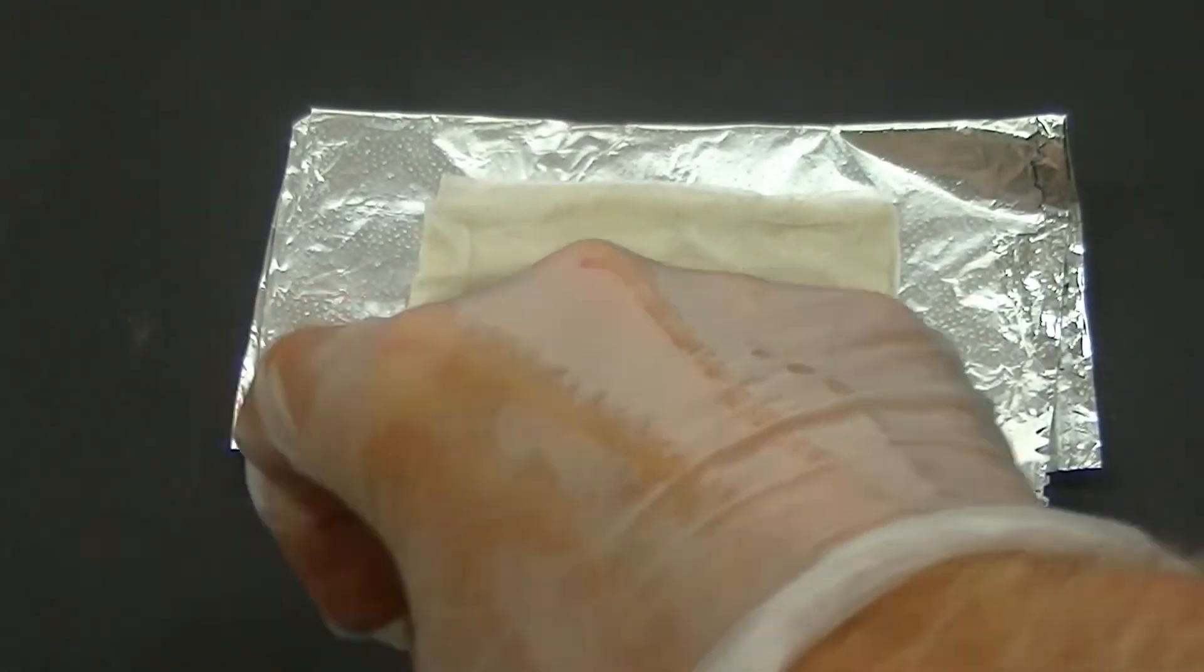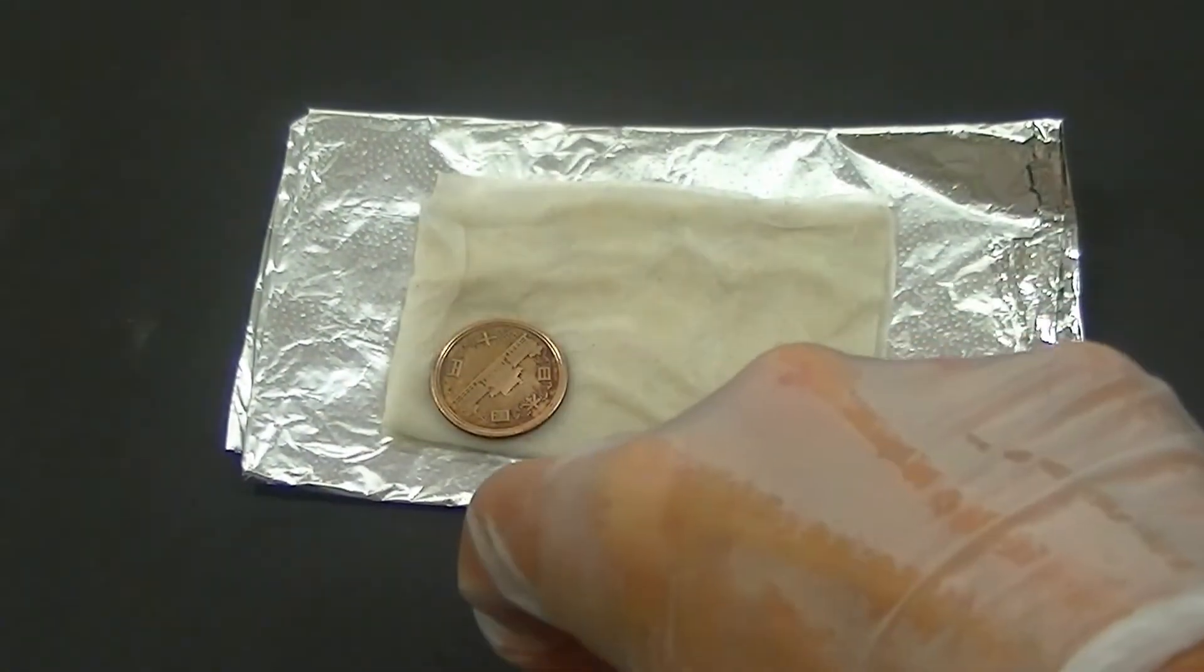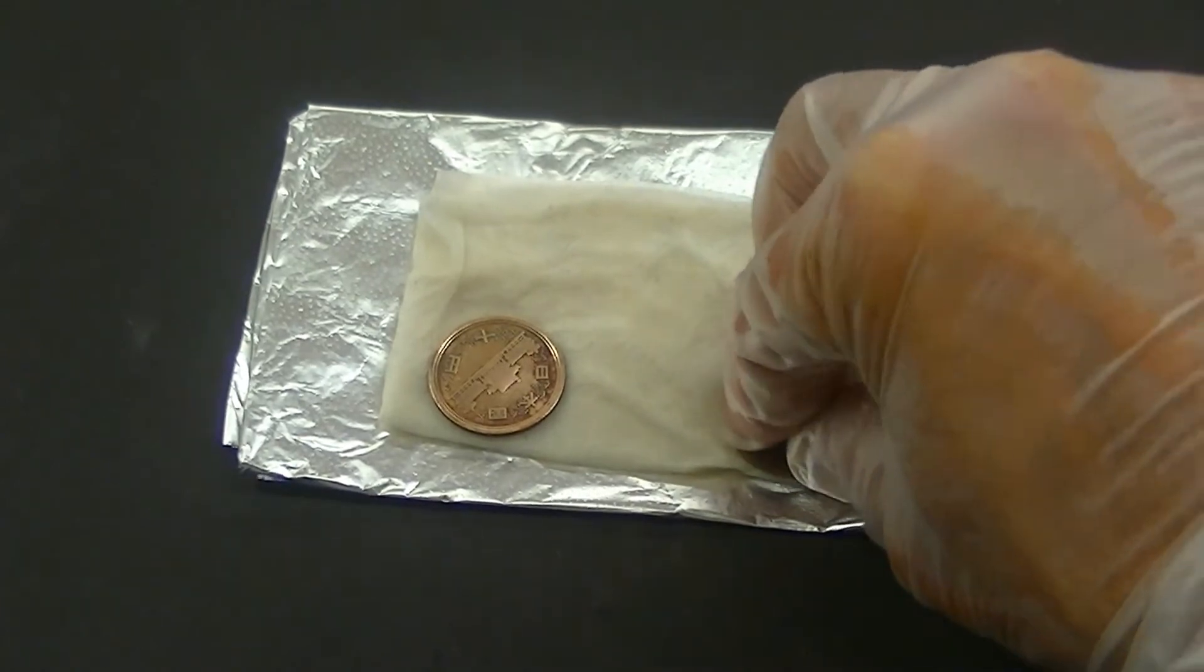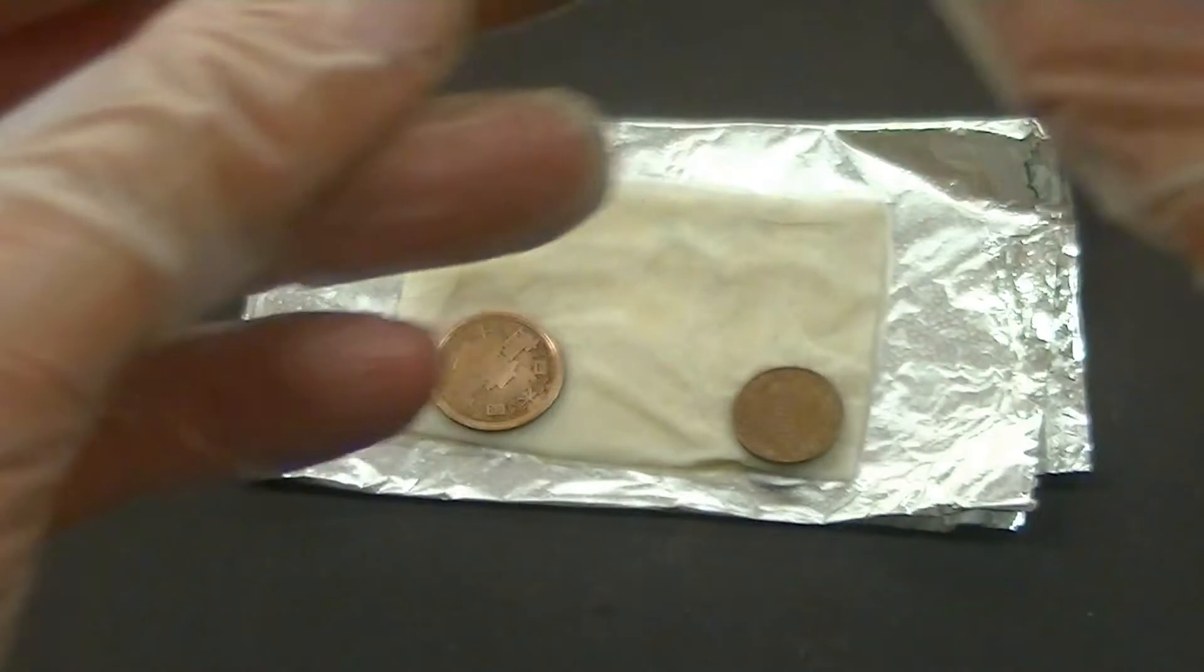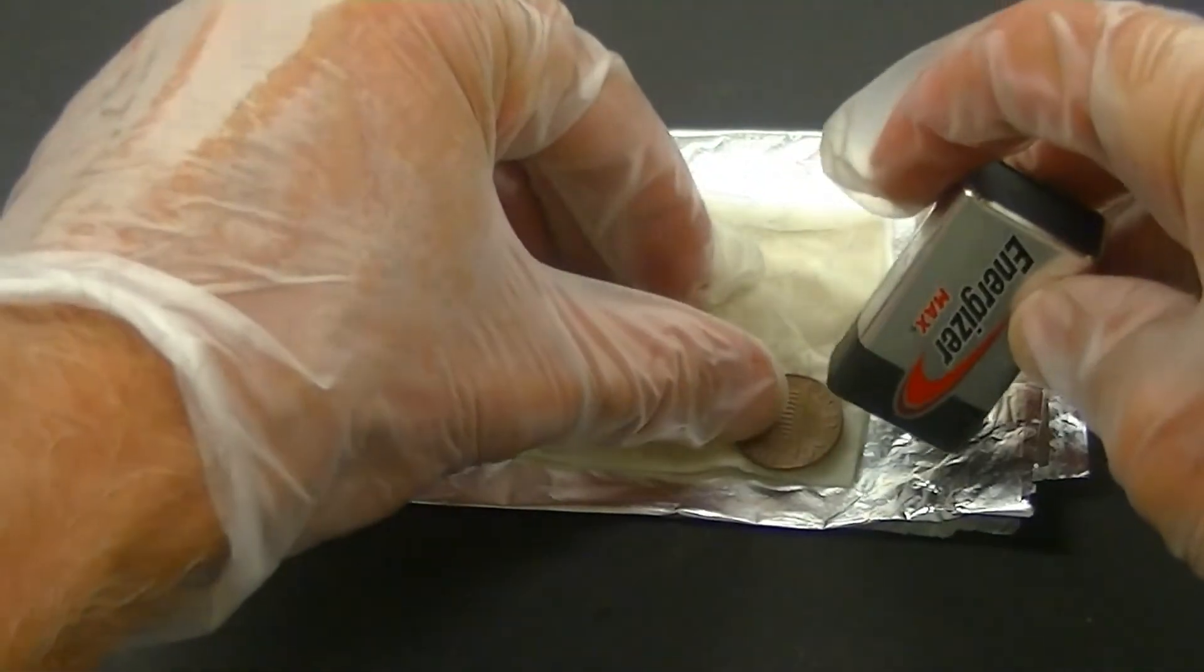Now the coins are placed on top of the paper towel, making certain they do not touch the foil. The positive terminal of the 9-volt battery is touched to one of the copper coins, while the negative terminal is touched to the foil.